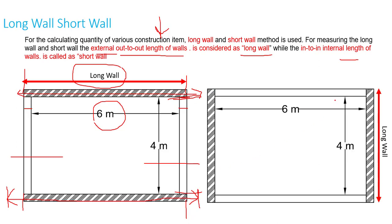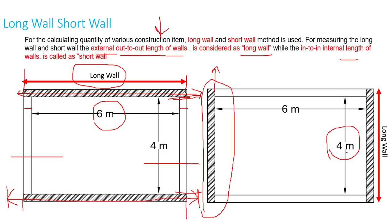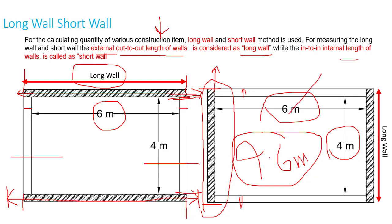Let me give you another example. If we take this wall as out to out dimension, it will be considered the long wall. The total internal length of this wall is 4 meters, and we add thickness from both sides to reach, let's say, 4.6 meters total including the thickness. If we measure the other wall, it is 6 meters in to in. So in this case, the 4.6-meter wall is the long wall and the 6-meter internal dimension wall is the short wall.